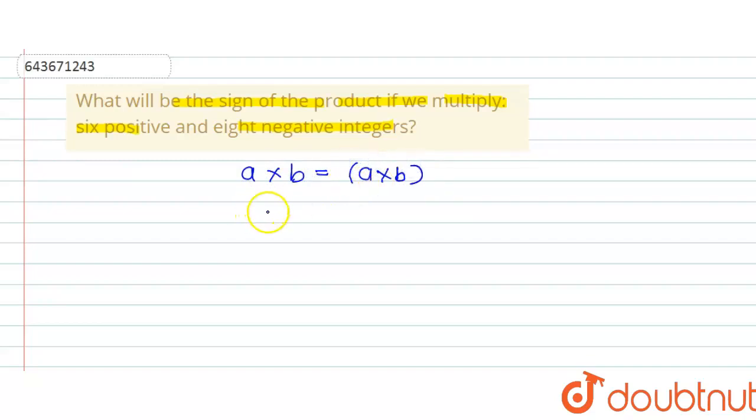positive. And if we are multiplying two negative integers with each other, the resulted product will also be a positive number with positive sign. So if we're talking about the six positive